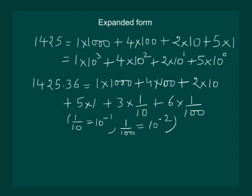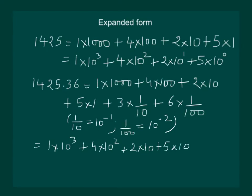So using this, we will get the expanded form as 1 into 10 cube plus 4 into 10 square plus 2 into 10 plus 5 into 10 power 0 plus 3 into 10 power minus 1 plus 6 into 10 power minus 2. It is clearly visible how negative exponents have helped us in expanding the number very easily.